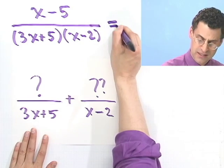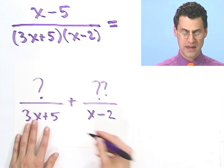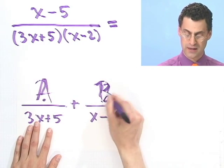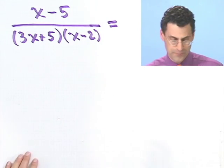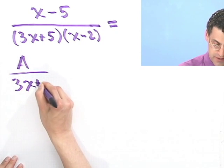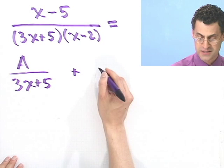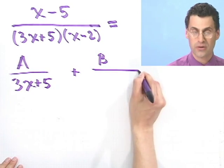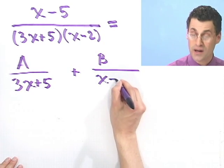And the trick is this. Since we don't know what the tops are, let's just give them names. I'll call this A, and I'll call this B. So in fact, that will equal A, some unknown thing, over 3x plus 5, plus, and then B, some unknown thing over x minus 2.